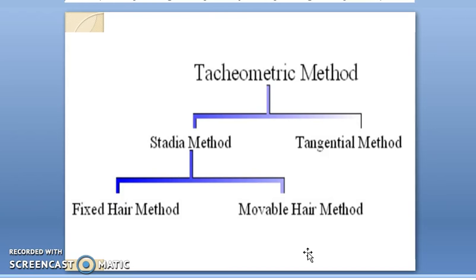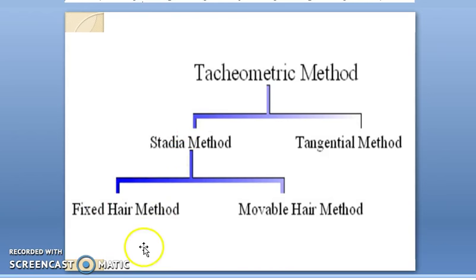In the classification of tachymetry methods, there are mainly two methods: the stadia method and the tangential method. For this class, we will be discussing the fixed hair method, which comes under the stadia method. In the stadia method, both the fixed hair as well as the movable hair method exist.